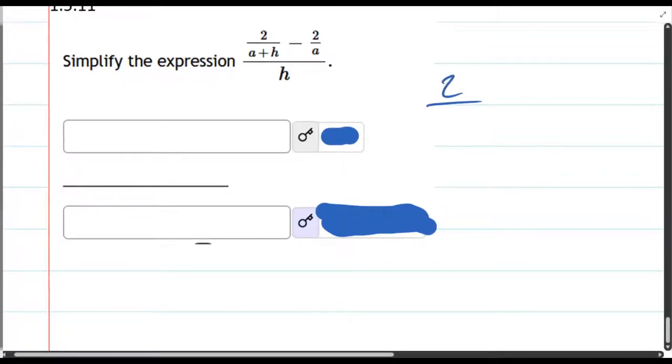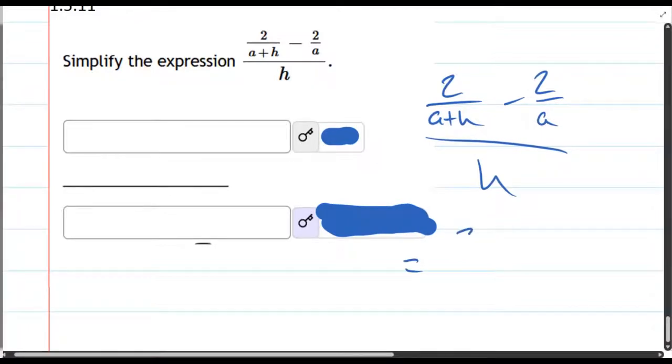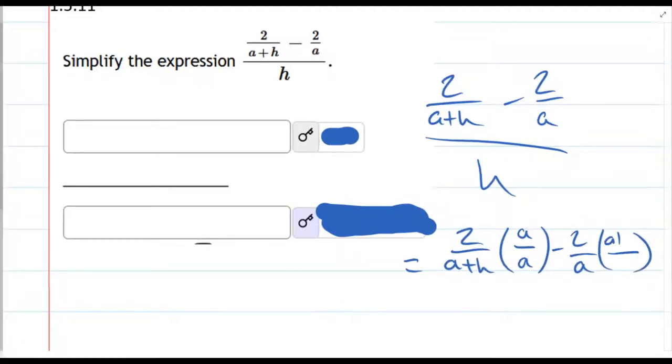So we'll start by rewriting it. We need to multiply this first fraction by a over a, and the second fraction by a plus h over a plus h.